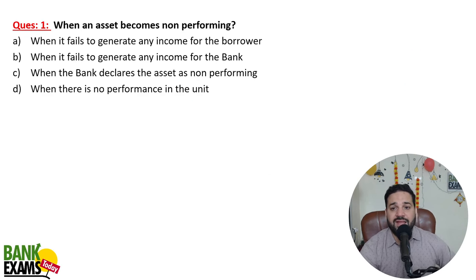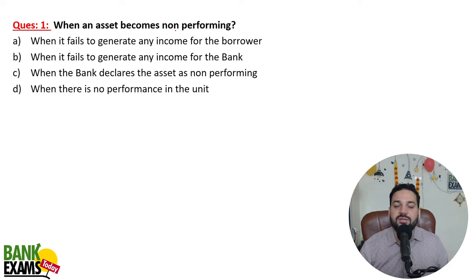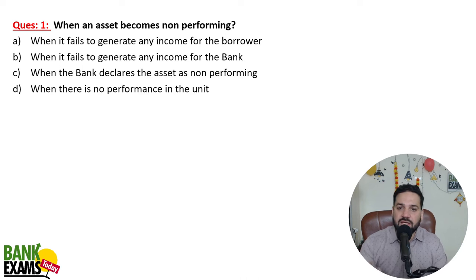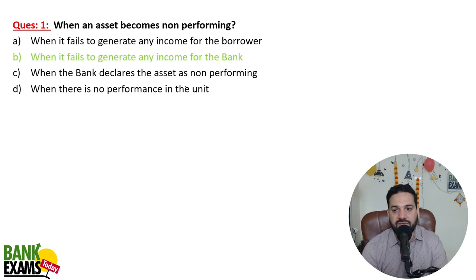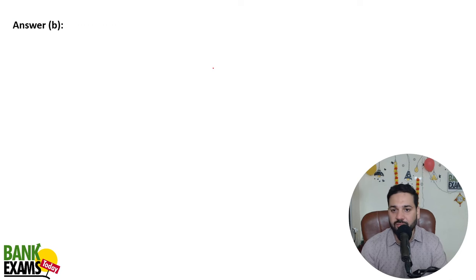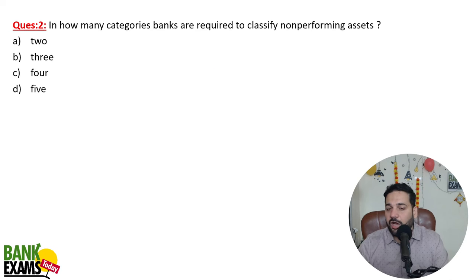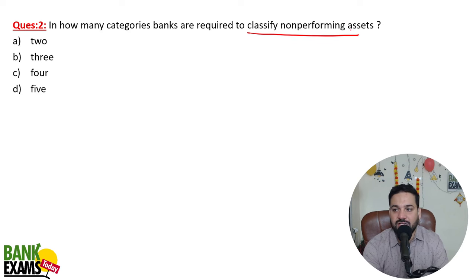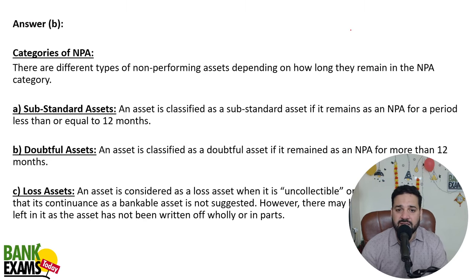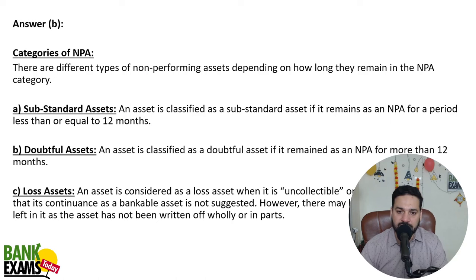When an asset becomes non-performing — for basic understanding, an asset is non-performing when it fails to generate any income for the bank. Banks are required to classify non-performing assets into three categories: substandard, doubtful, and loss.